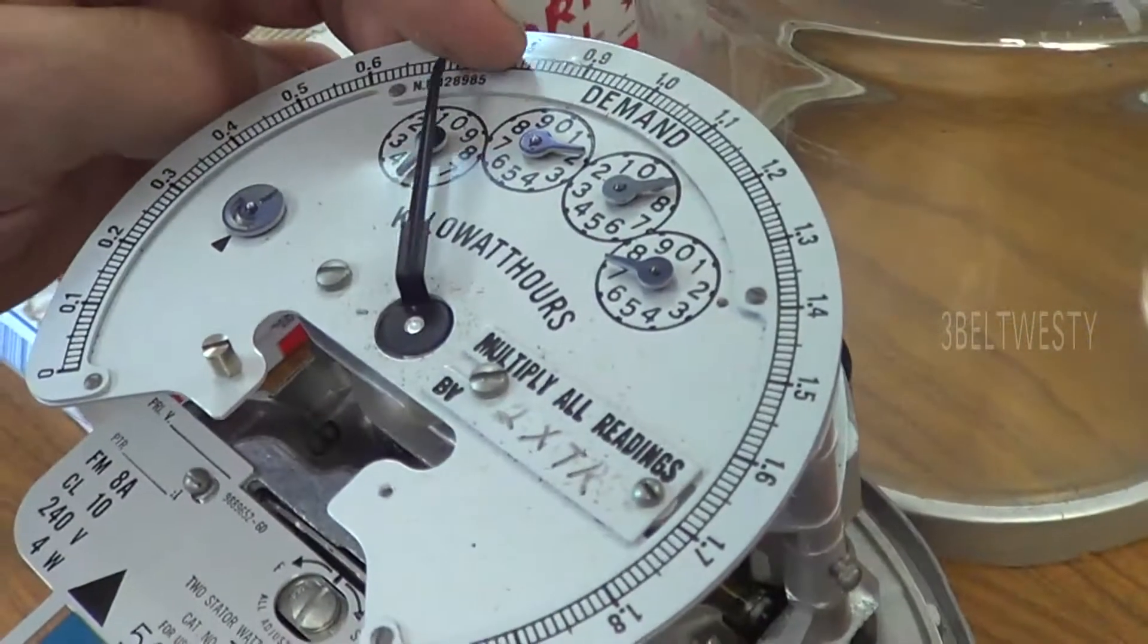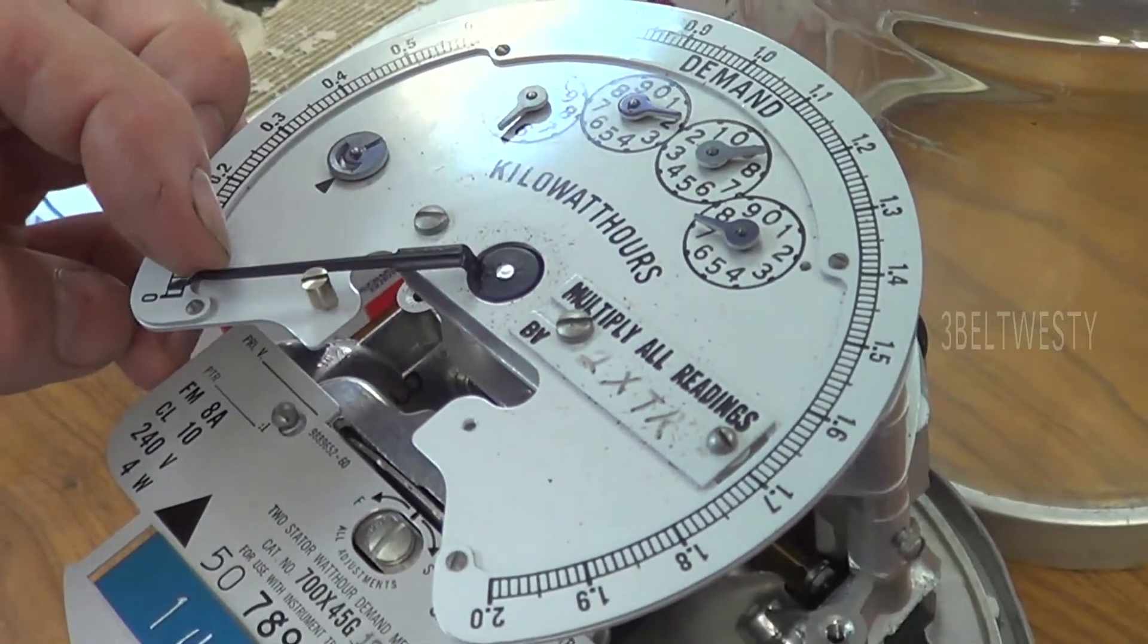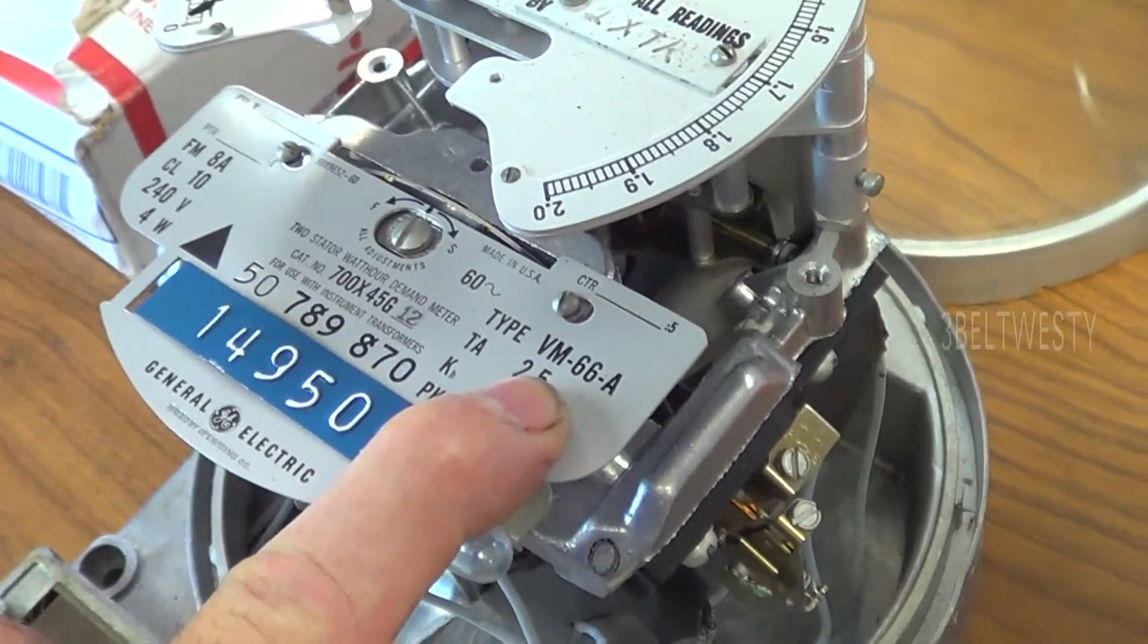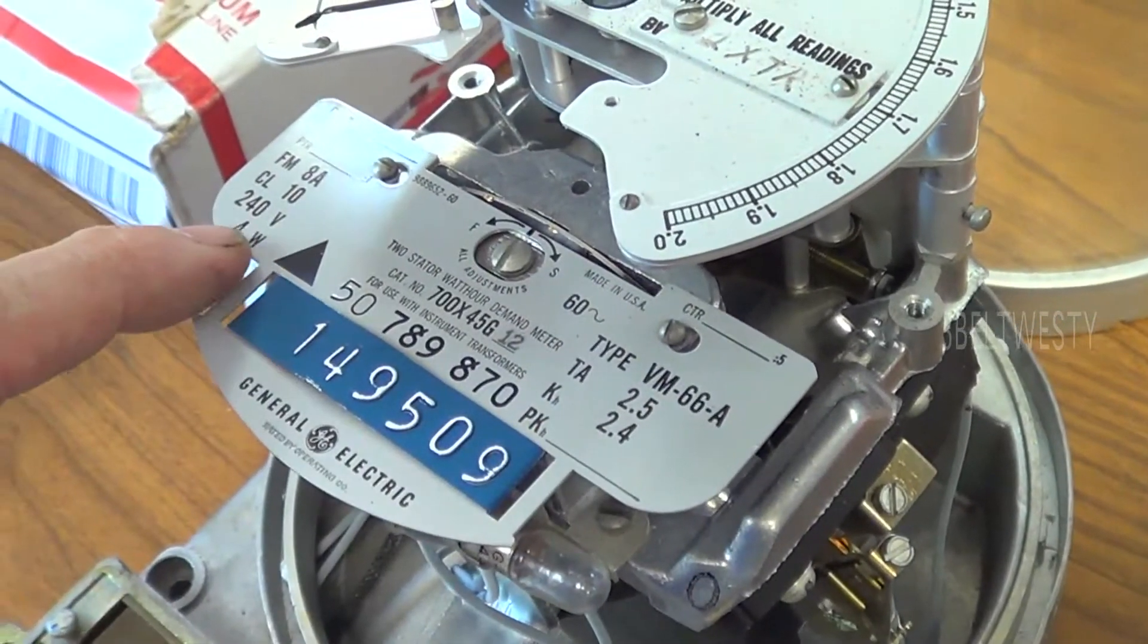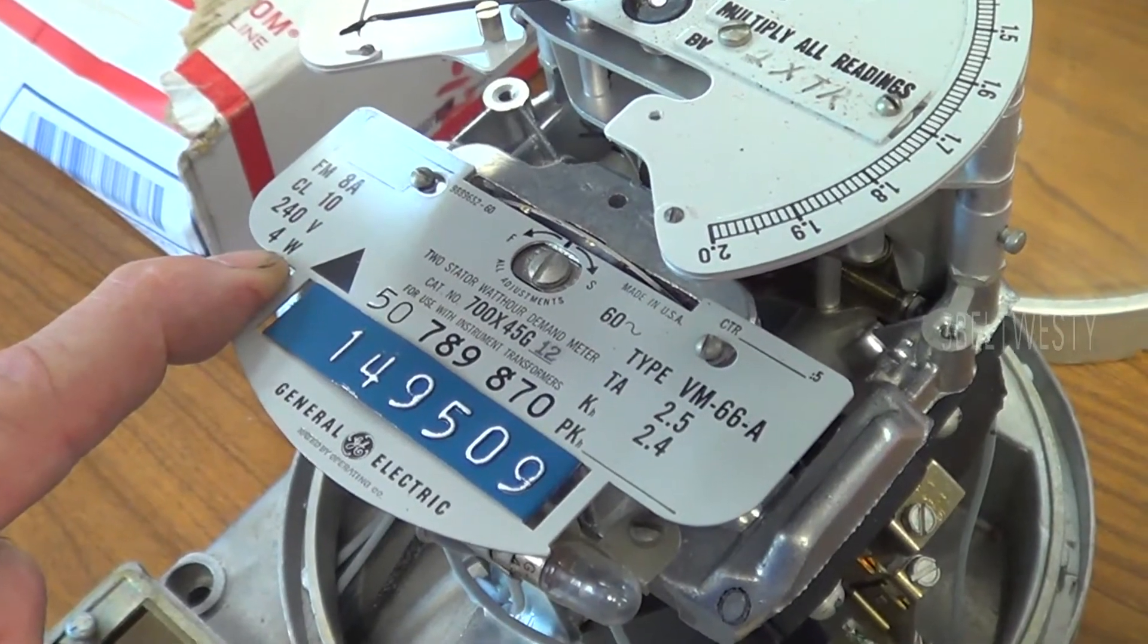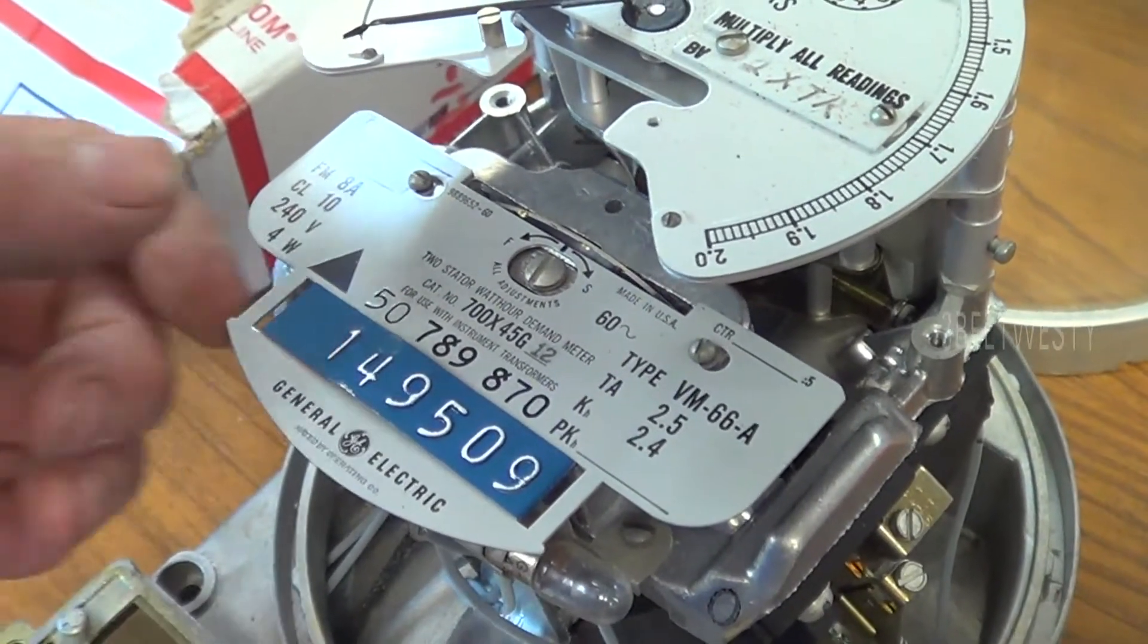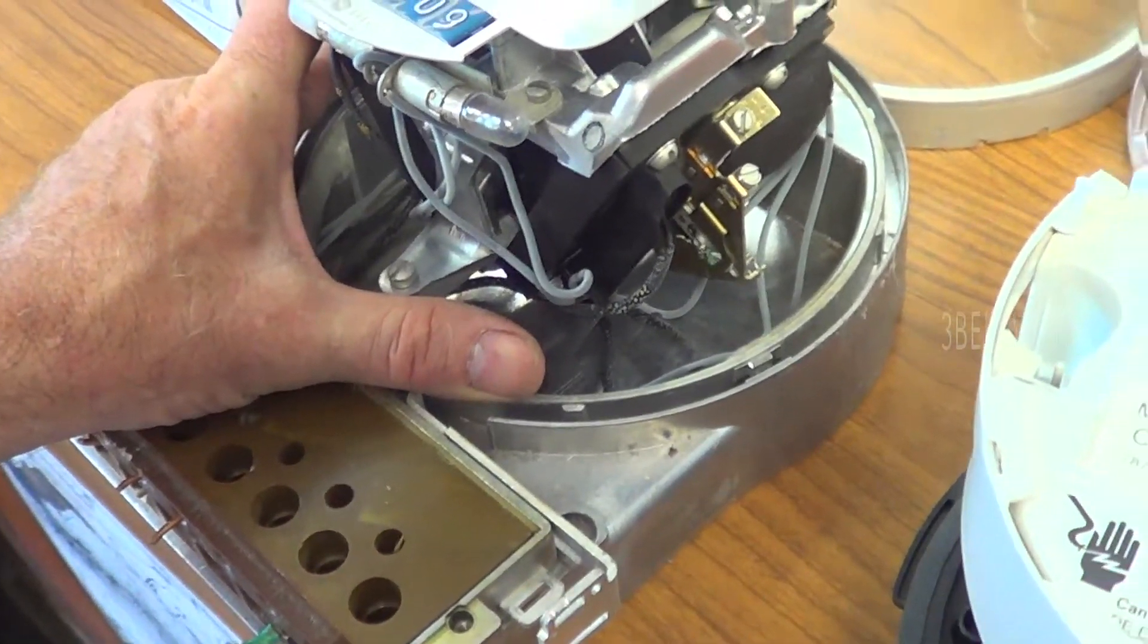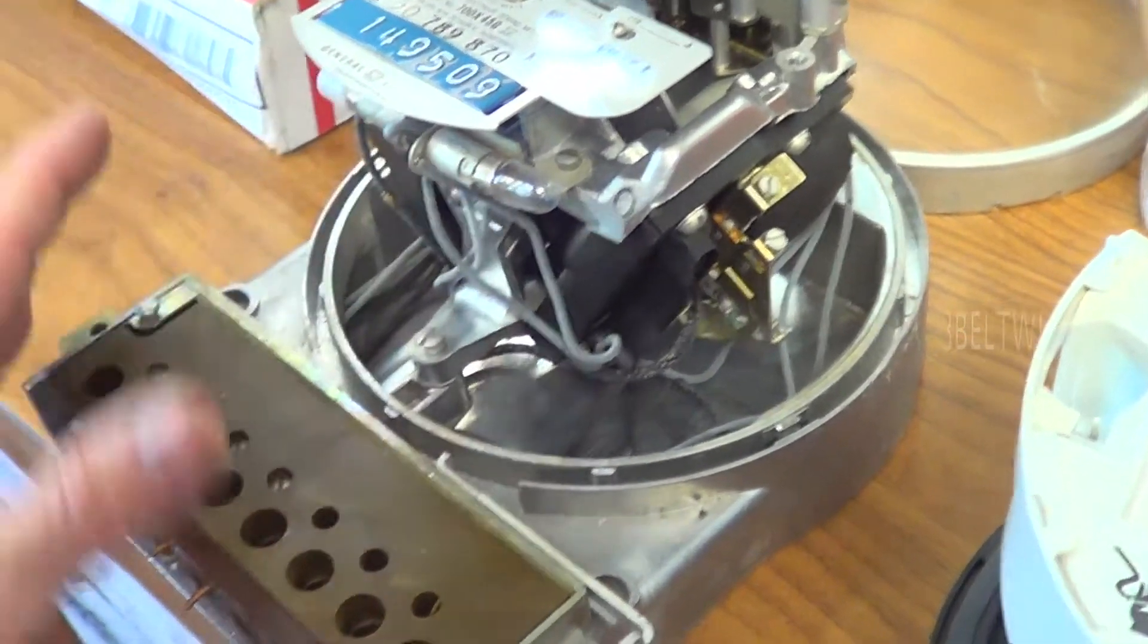This is a VM 66A meter, class 10, 240 volts, four wire delta.